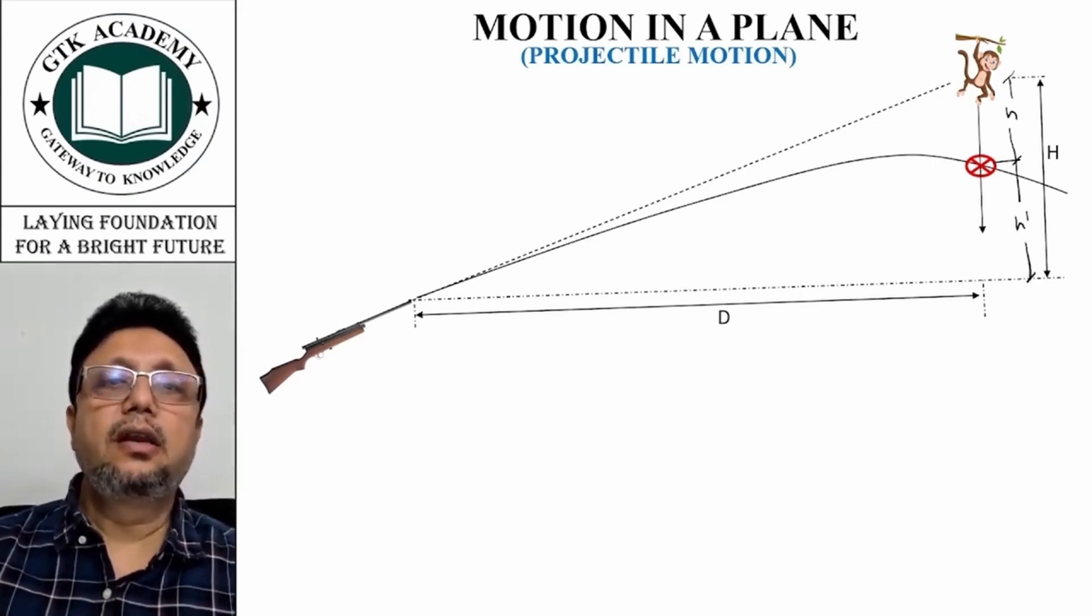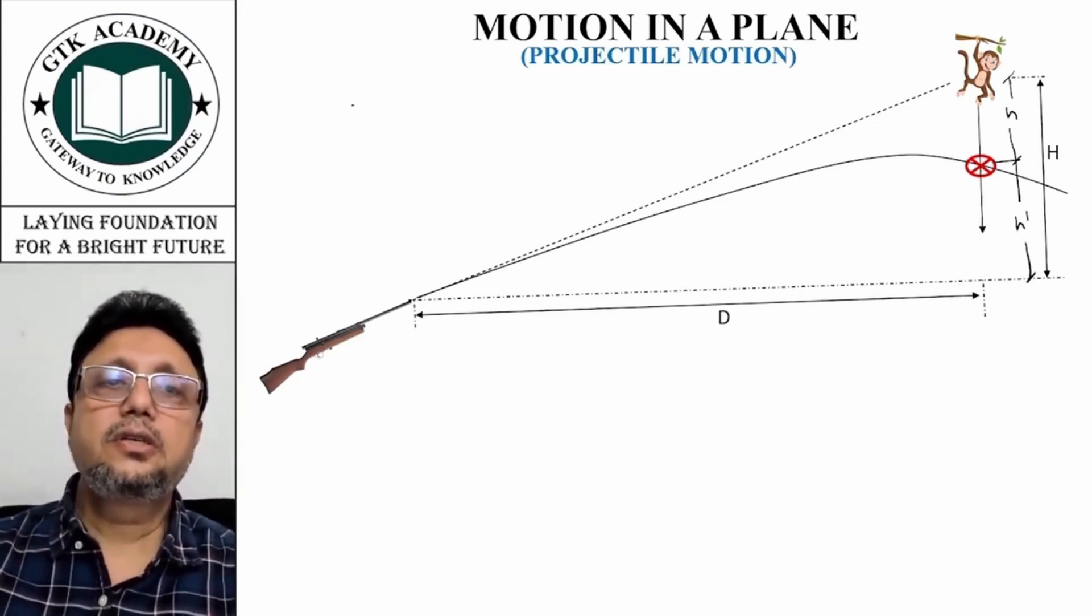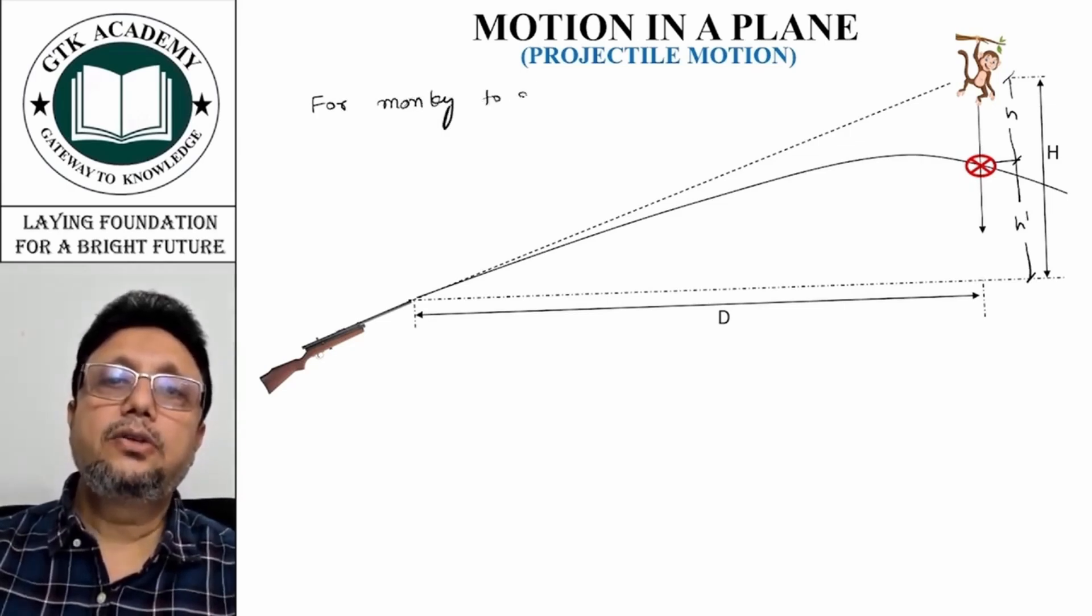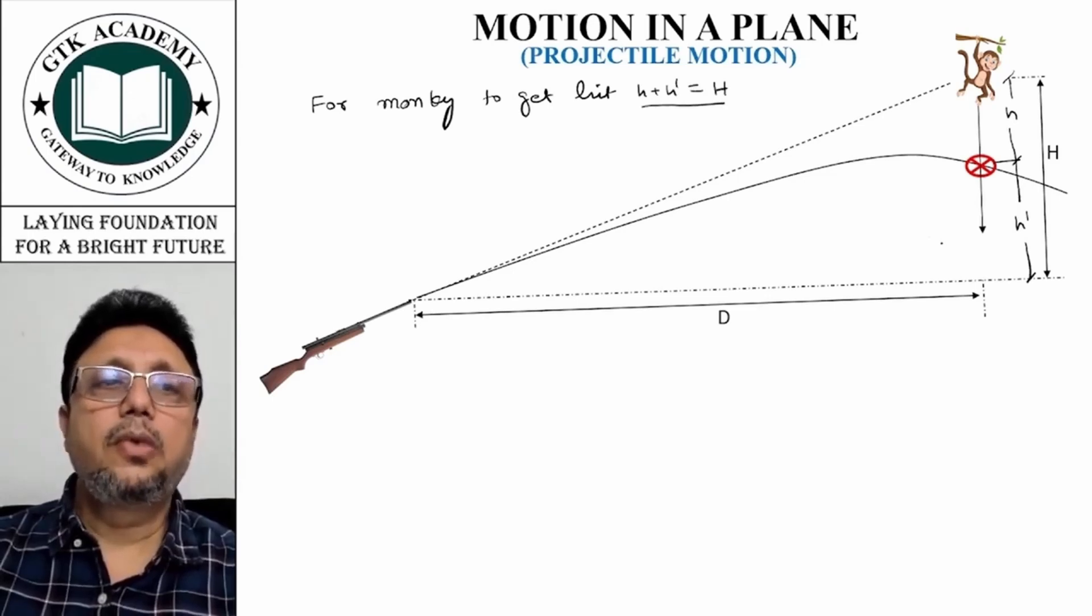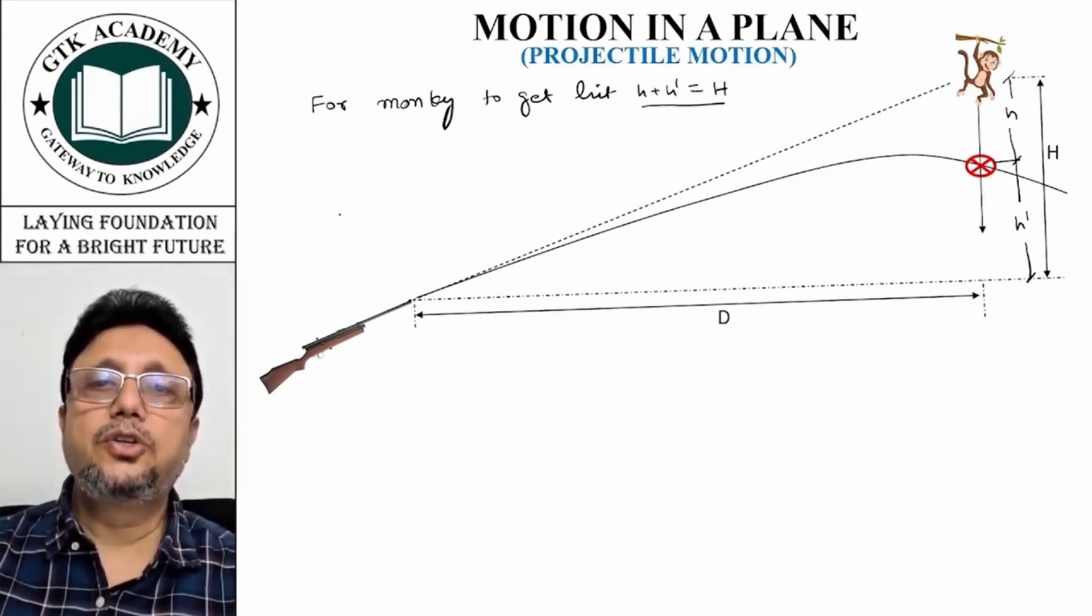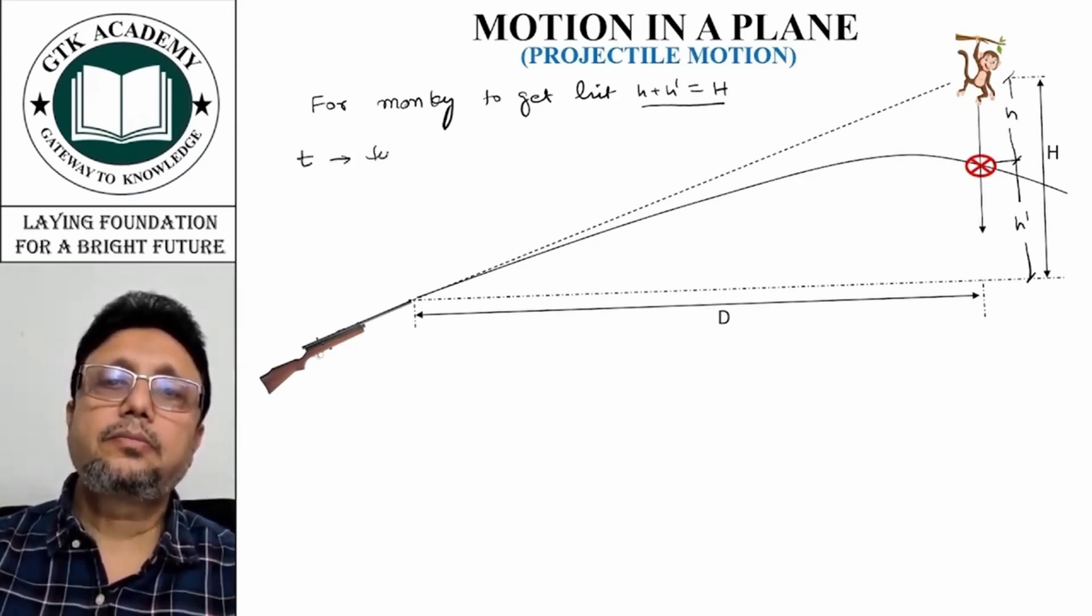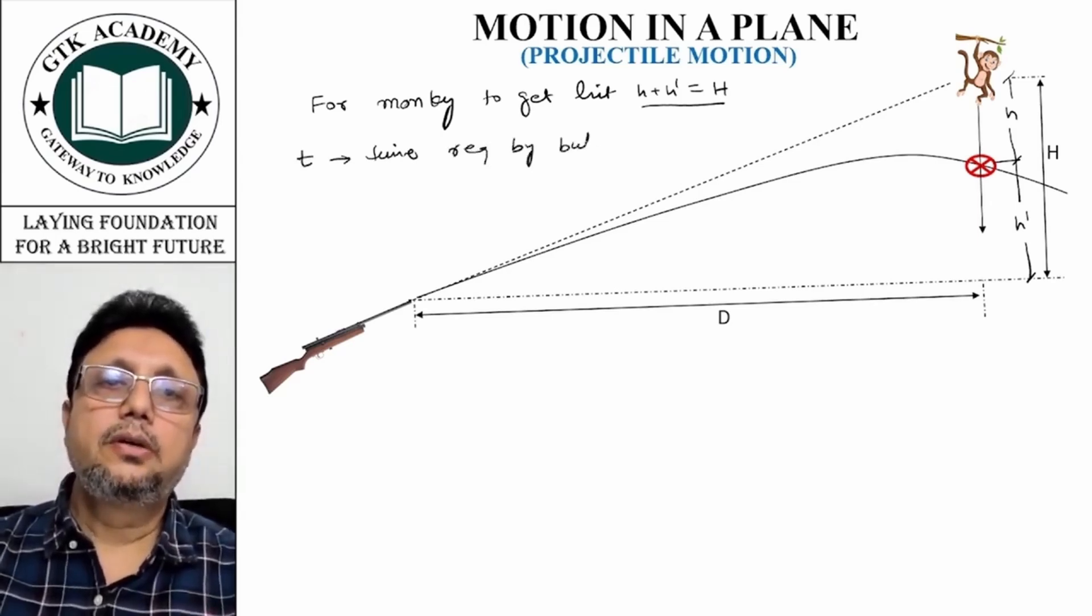For the monkey to get hit, h plus h dash should be equal to capital H. If we are able to prove this, that means the monkey is bound to be hit by the shot. Now let t be the time required by the bullet or shot to travel horizontal distance of d.